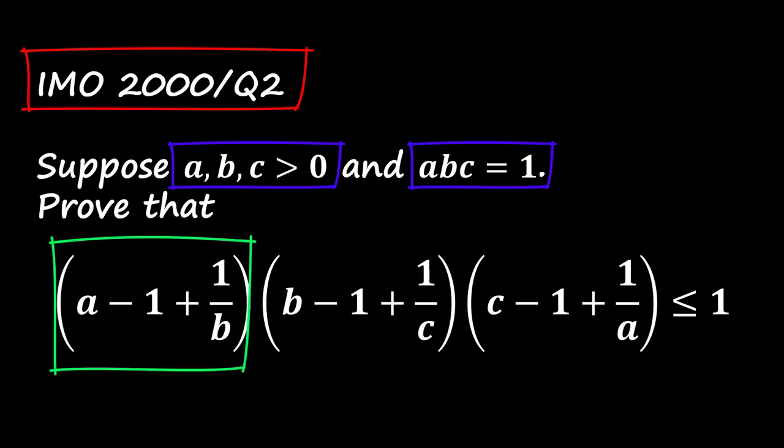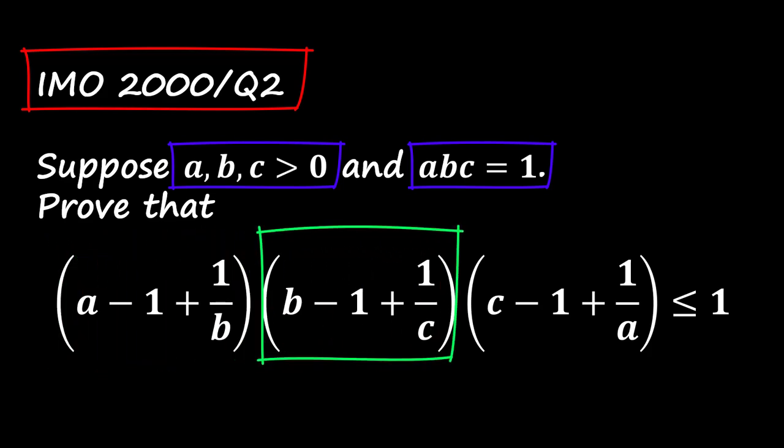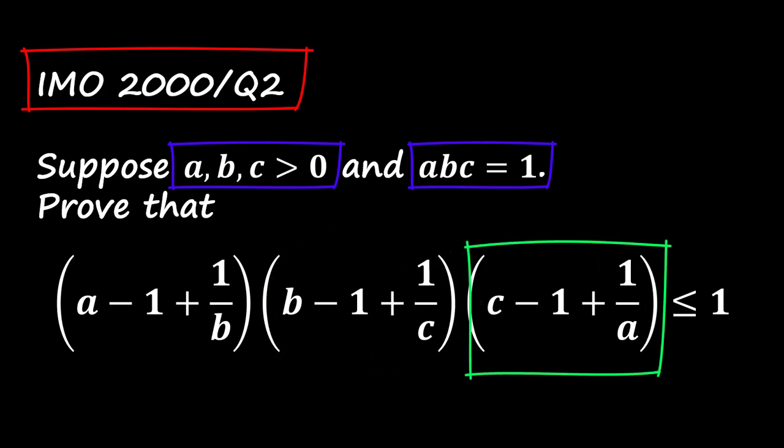First, A minus 1 plus 1 over B. Second, B minus 1 plus 1 over C. And third, C minus 1 plus 1 over A.